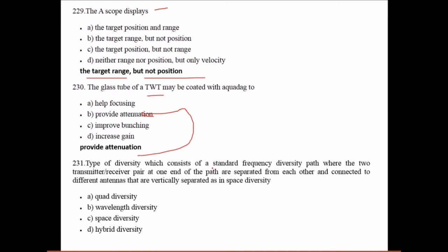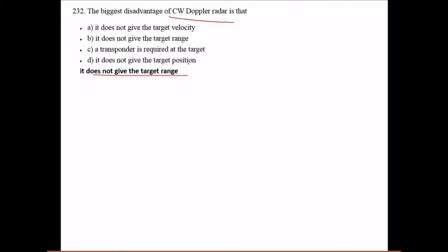The type of diversity which consists of a standard frequency diversity path where the two transmitter-receiver pairs at one end of the path are separated from each other and connected to different antennas that are vertically separated as in space diversity - it is hybrid diversity. The biggest disadvantage of CW Doppler radar is it does not give the target range.